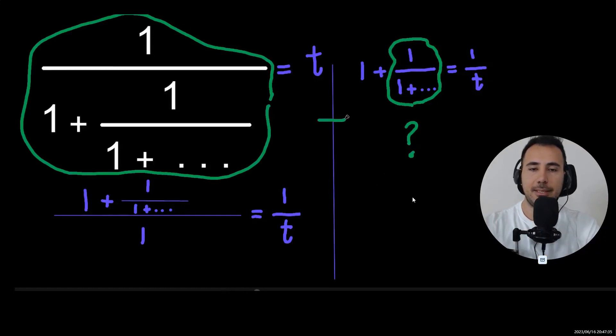They are the same. But why? You see, here we had one over one plus one over, and here the same thing is happening infinite times. Here it's happening infinite times, so they are the same. So instead of this we could write T, and when we do so we're going to have a quadratic equation to solve.